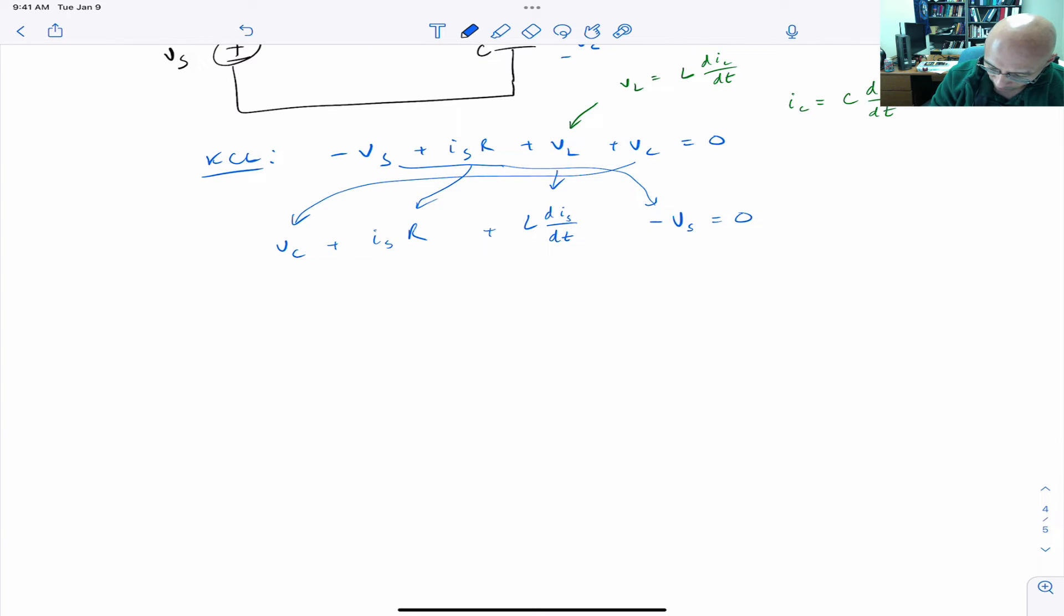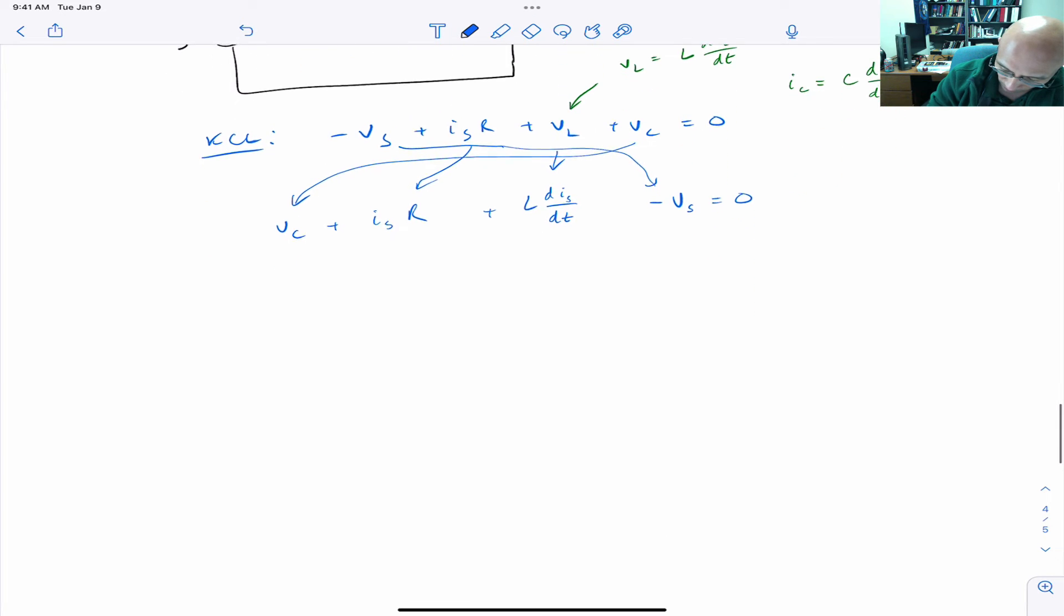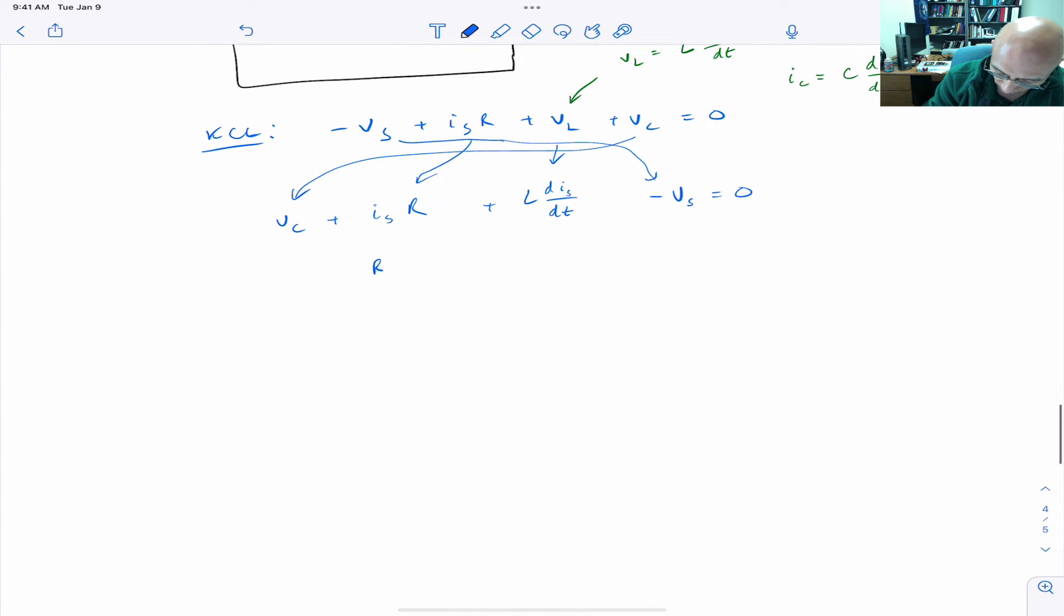Now we're going to use the capacitor current equation. So putting that in here, we're going to have IS instead of IC. They're the same, they're synonymous. The current flowing through the capacitor is IS. So we'll put here RC DVC DT.